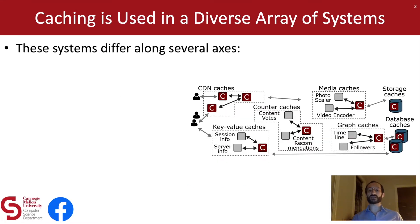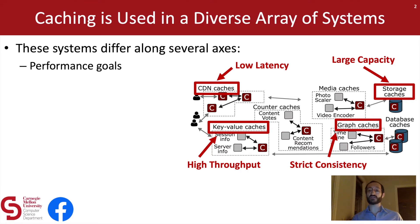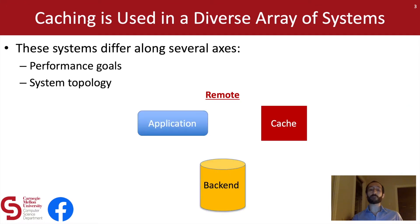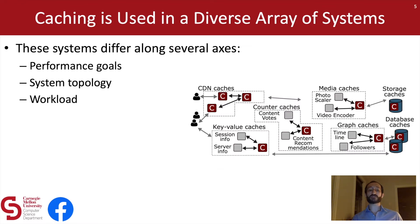Given the diversity of these use cases, it's no surprise that these systems differ along several axes. For example, these systems have different performance goals. CDN caches prioritize low latency. Storage caches require large capacity to store large images and videos. Key value caches are shared by many users and thus require high throughput. Social graph caches require strict consistency to ensure that updates are observed in a timely manner. These systems also differ in terms of system topology — some are remote caches and some are in-process caches — and also differ in terms of their workload, which can have massive impacts on cache performance.